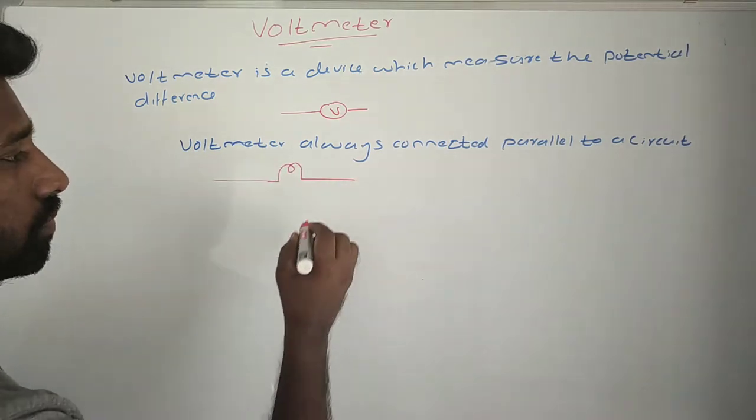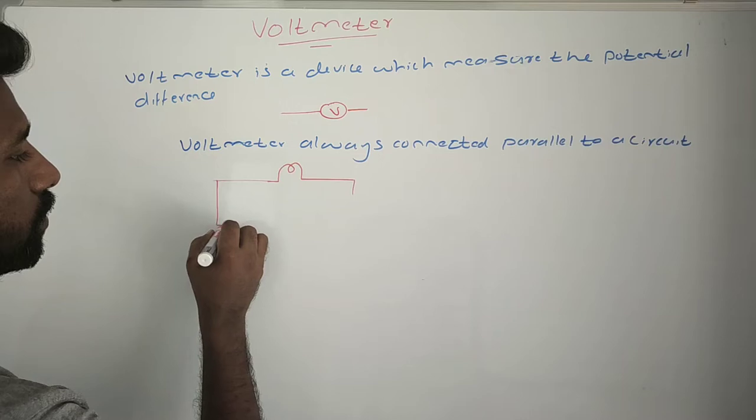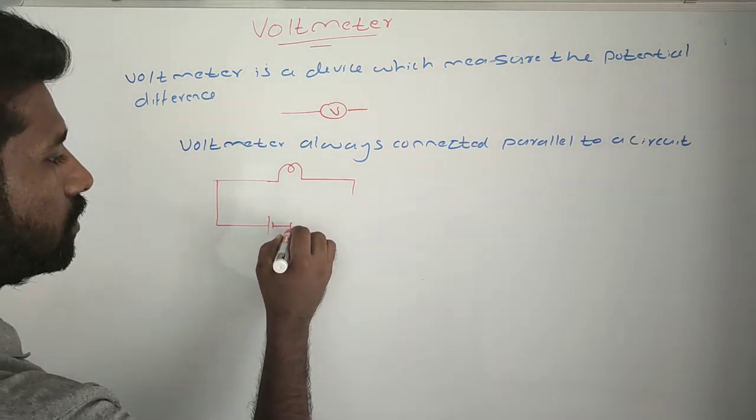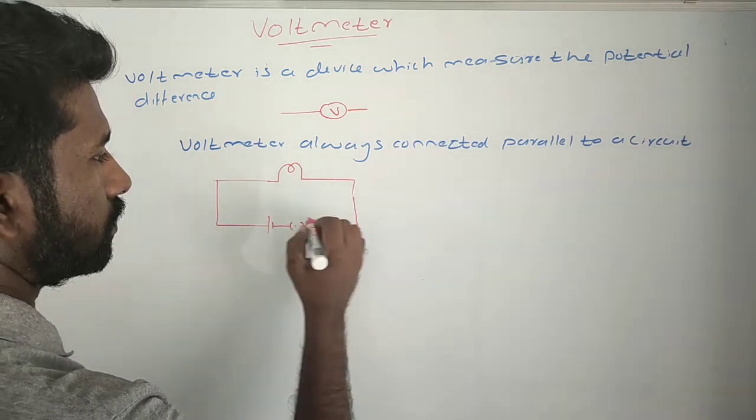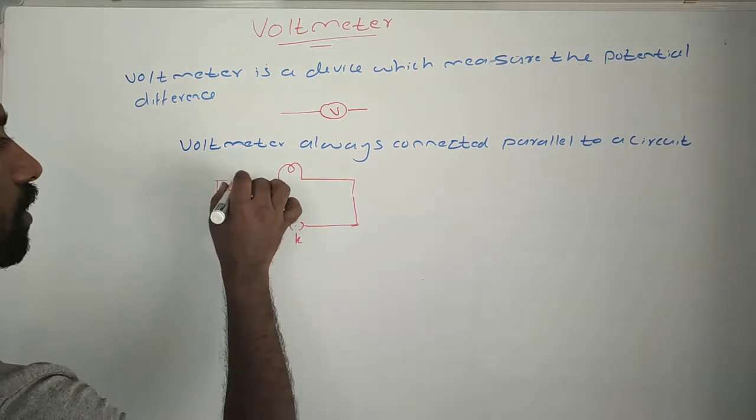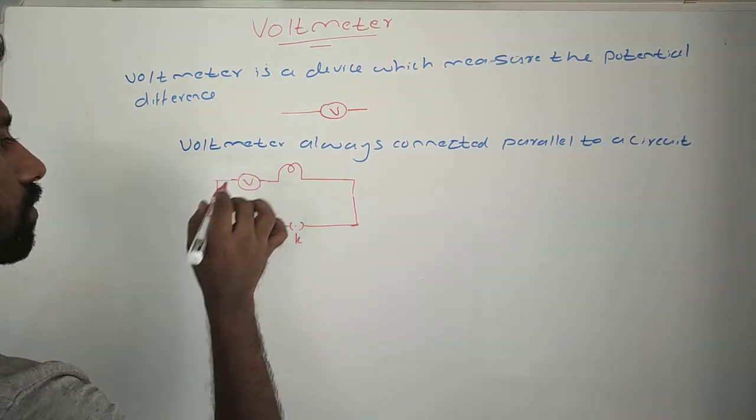This bulb is going to be connected to a battery by using a key. If the voltmeter I will connect here, what will be happening?